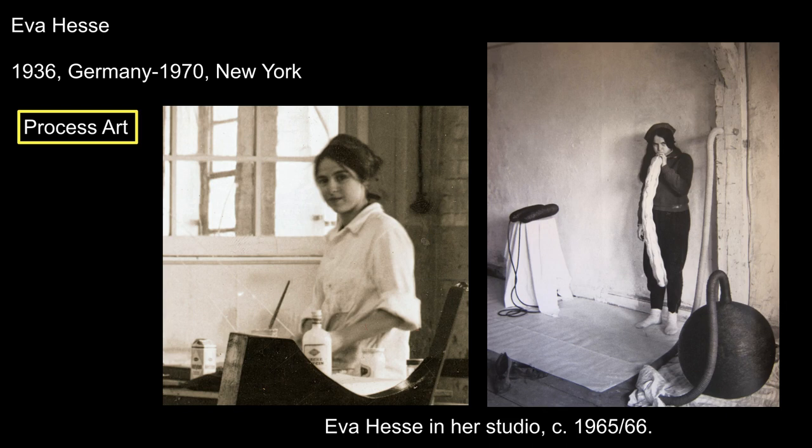Her work is part of post-minimalism, but is also categorized as process art—a type of art in which the process of making the art is stressed, and often involves new means of production like using gravity through dropping or hanging media. Works are often organic and employ non-traditional materials like cloth, wire, and wax.